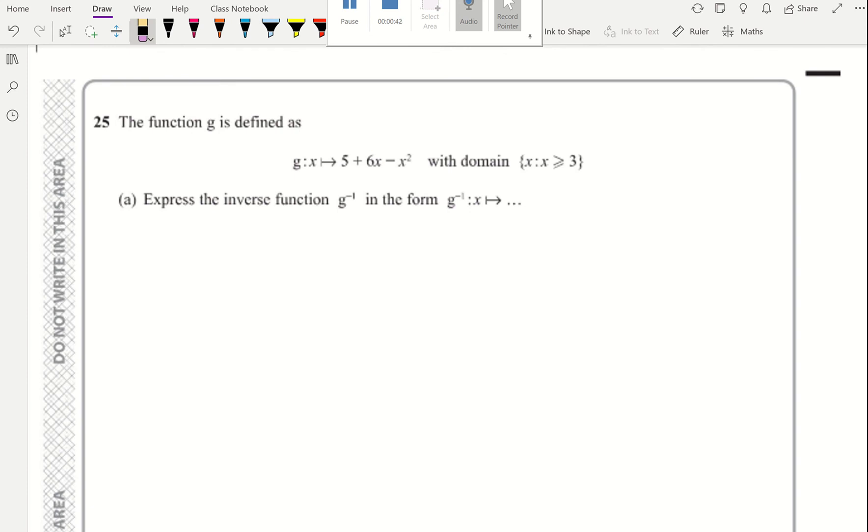The function g is defined as 5 plus 6x minus x squared with the domain x is bigger than or equal to 3. That information is important.